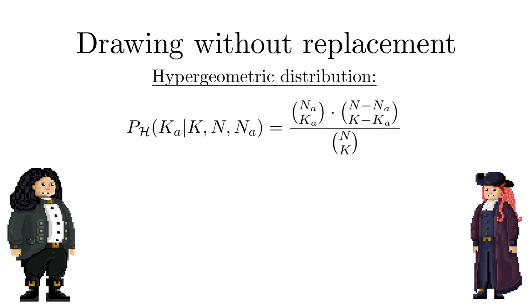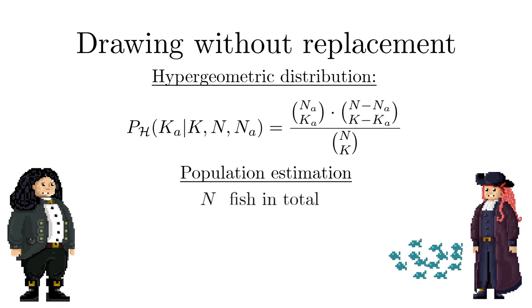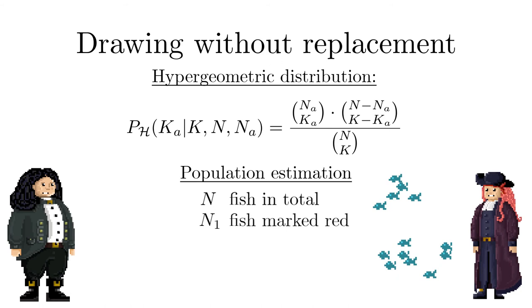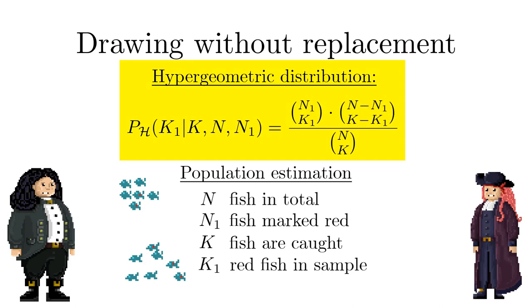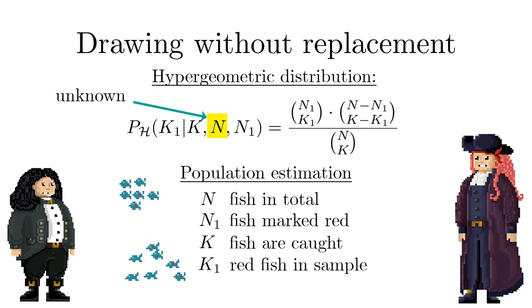The hypergeometric distribution is of importance in mark recapture techniques for population estimation which is used in ecology to estimate population sizes of animals or in epidemiology to track the spread of diseases. For concreteness let us consider the following example. Assume the total number of fish in a lake is N. Out of these N1 fish are caught, tagged with a red dot and released. After a sufficiently long period of time, to allow for mixing, K fish are caught. What is the probability for having K1 labeled fish in the sample if N is known? This probability is given by the hypergeometric distribution. But in real life the total number of fish N is not known and is actually the key object of this venture. We will learn in a future unit how Bayes theorem can be used to solve this inverse problem.